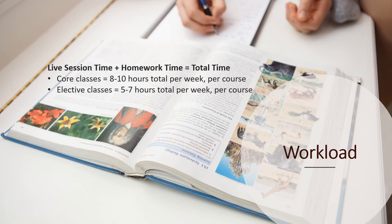Core subjects of English, history, math, science, and world language have live sessions that meet twice a week for 90 minutes, either on Monday and Wednesday or Tuesday and Thursday. In addition to the three hours total of classroom live sessions, students can anticipate five to seven hours of homework per week per course. Our Friday schedule is reserved for electives. These courses have lighter workloads, meeting for a live session only once a week for up to two hours, with three to five hours of homework per week per course. We expect students to take a minimum of five courses for full-time enrollment, and so the average student will be spending about 40-plus hours per week on schoolwork between their live session and homework time.